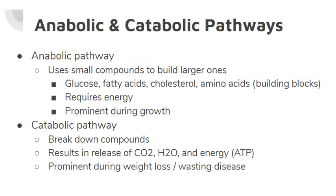All of the metabolic pathways within the body can be classified as anabolic or catabolic. Anabolic pathways use small compounds like glucose, fatty acids, cholesterol, and amino acids to build larger compounds. We have previously discussed how the body breaks down the food you eat to get to these smaller compounds through digestion and absorption. Anabolic pathways take these building blocks and synthesize glycogen, hormones, enzymes, and other proteins, which keep the body functions growing and developing. This pathway requires energy and is used more during periods of growth because more tissue is being made than broken down.